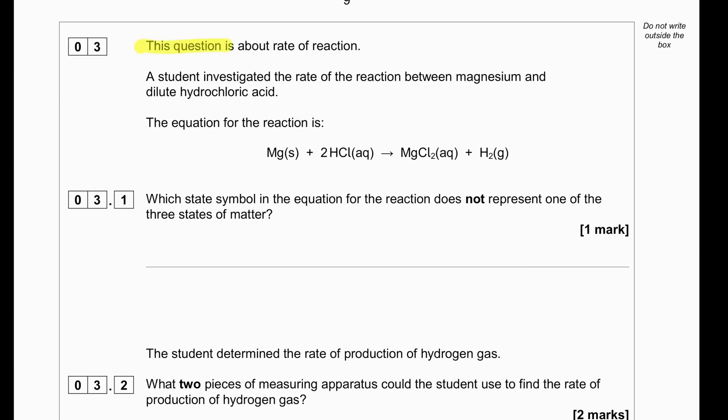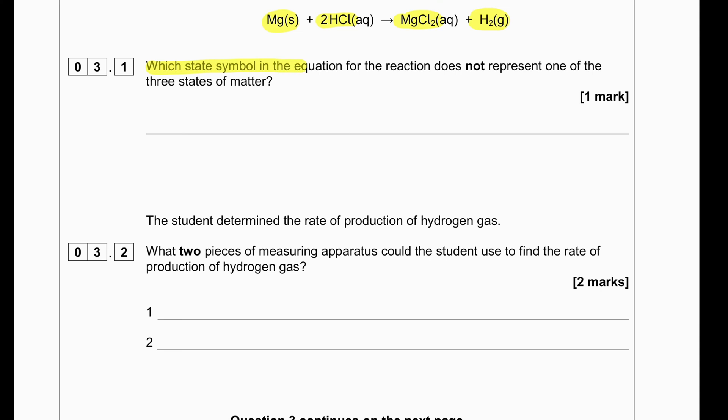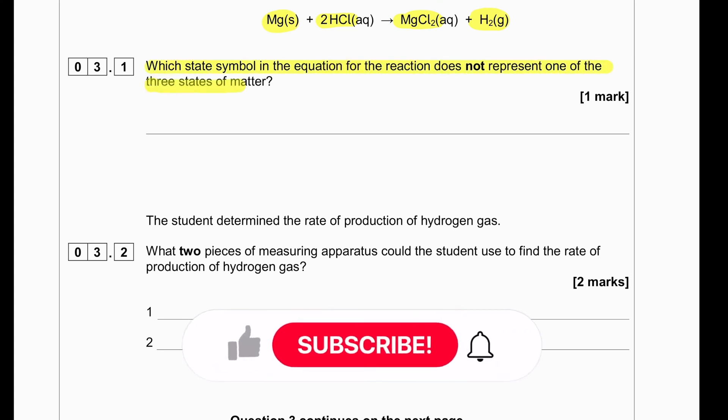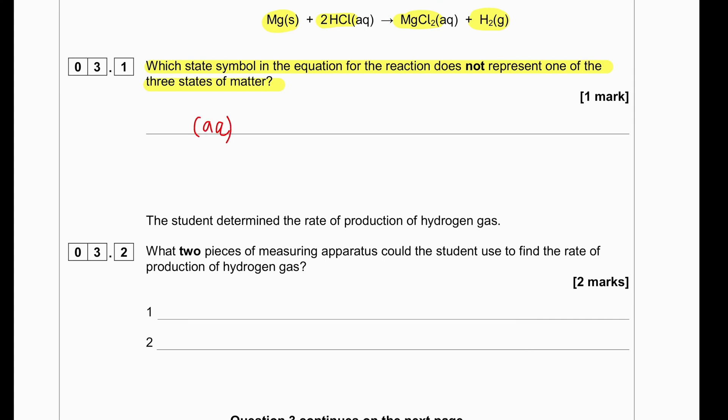This question is about the rate of reaction. A student investigated the rate of reaction between magnesium and dilute hydrochloric acid. The equation for the reaction is magnesium reacting with hydrochloric acid producing magnesium chloride and hydrogen. Which state symbol in the equation for the reaction does not represent one of the three states of matter? Aqueous. Aq represents aqueous. So this is not one of the three states of matter.